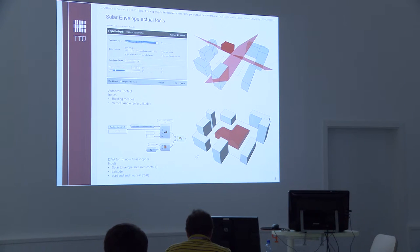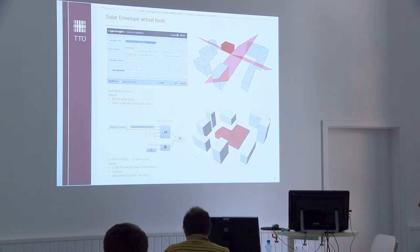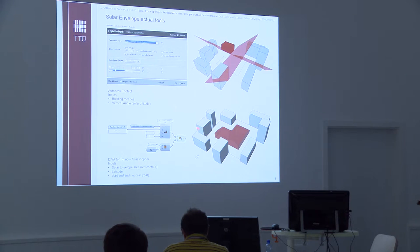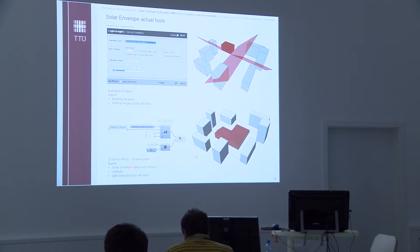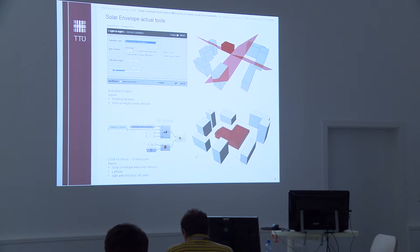Quite few inputs, and some elements that we can use in design, but still not very easy to use. A slightly more advanced tool is Dara for Rhino and Grasshopper. In this case the inputs are the contour line at the base of the facade that we don't want shaded — in this case all year, though it is not possible to select other periods — but we can select the start and end hour for every day, and the most important input is the latitude of the location. The solar envelope is then generated guaranteeing, for example, sun access from 10 to 2 for every day.